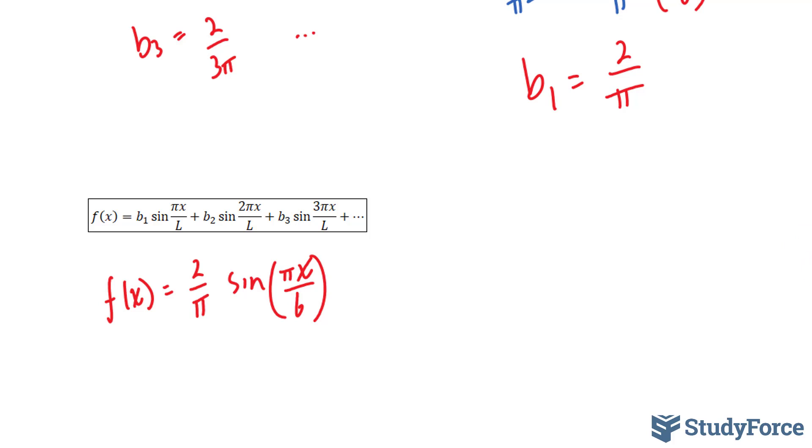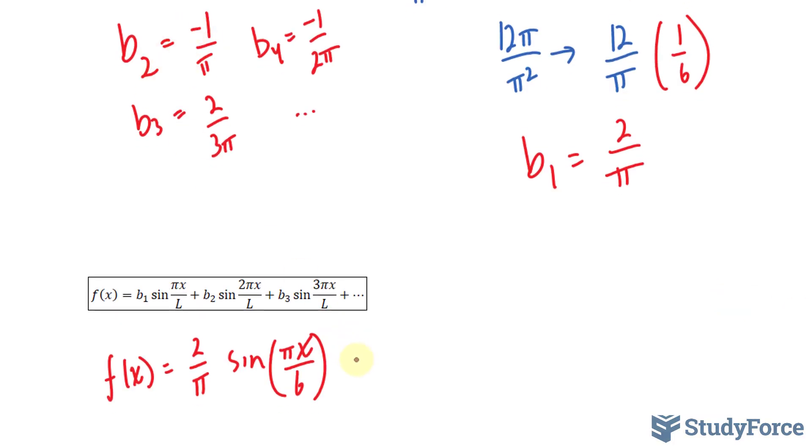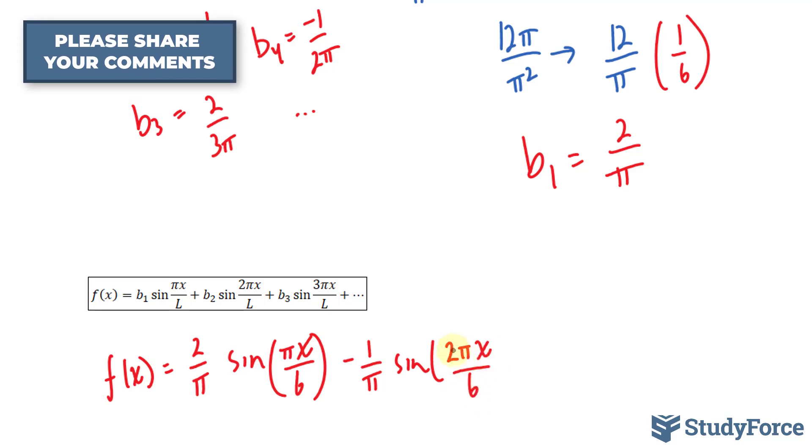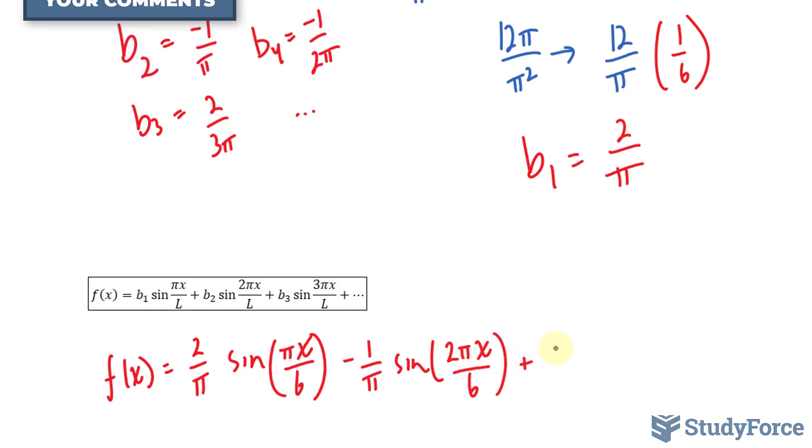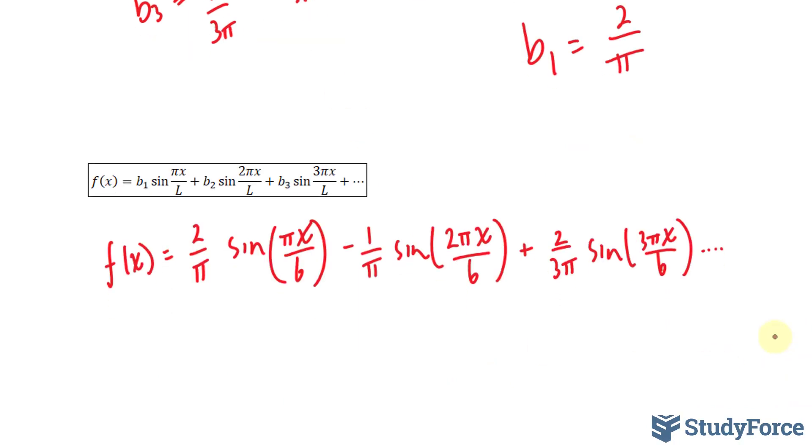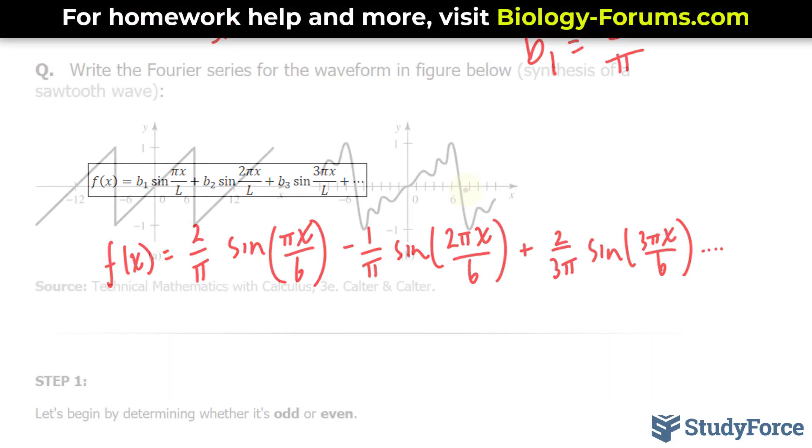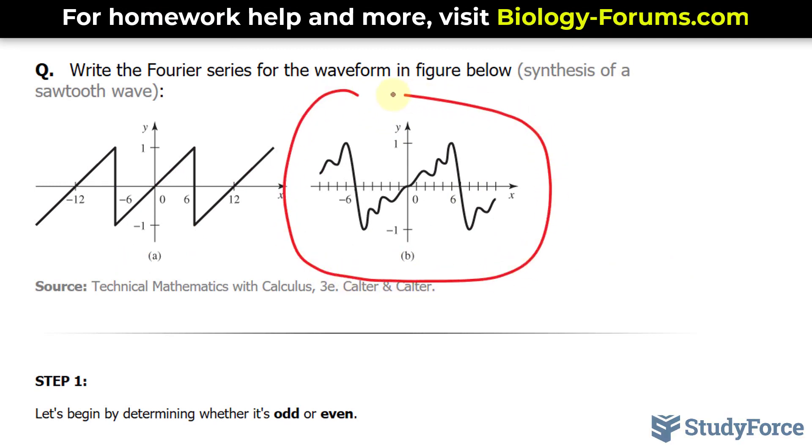b sub 2 is right here. That's negative 1 over π sin 2πx over 6. And that reduces down to a third. Plus 2 over 3π sin 3πx over 6. That reduces to half. And you continue this with b sub 4, b sub 5. And if you end up graphing those 5 terms, you will end up with the waveform that was shown at the beginning.